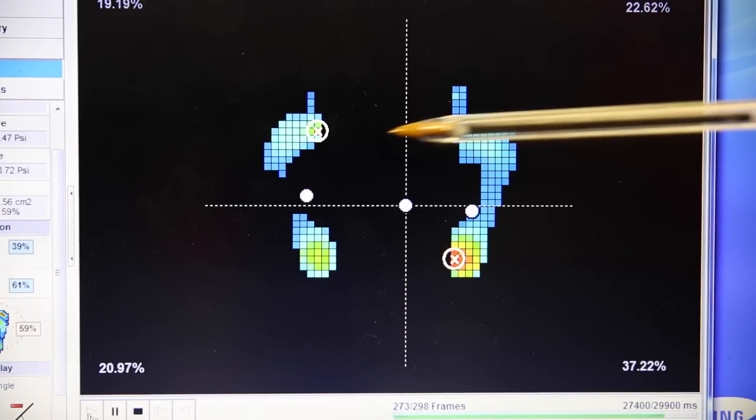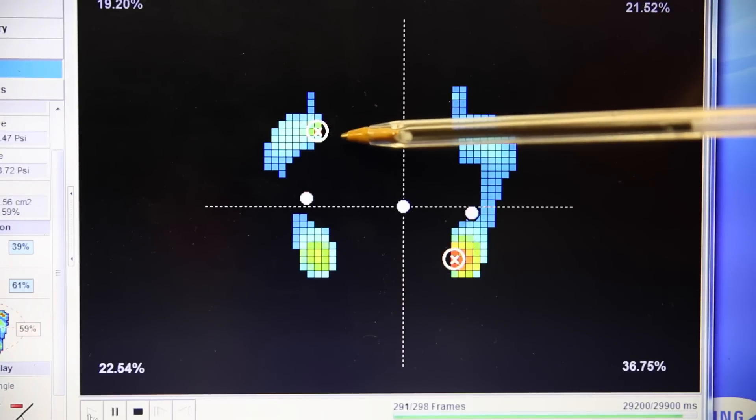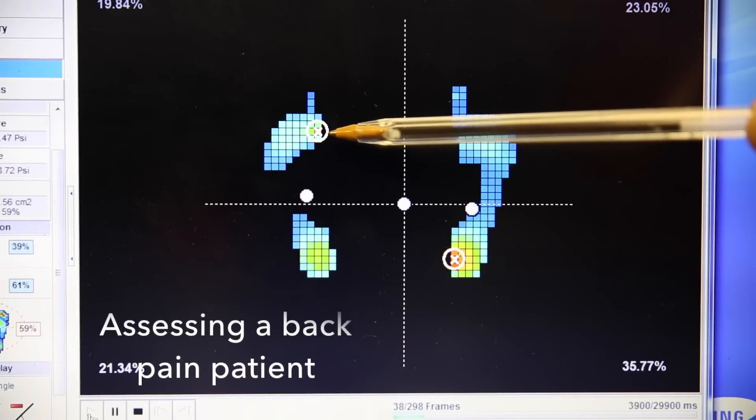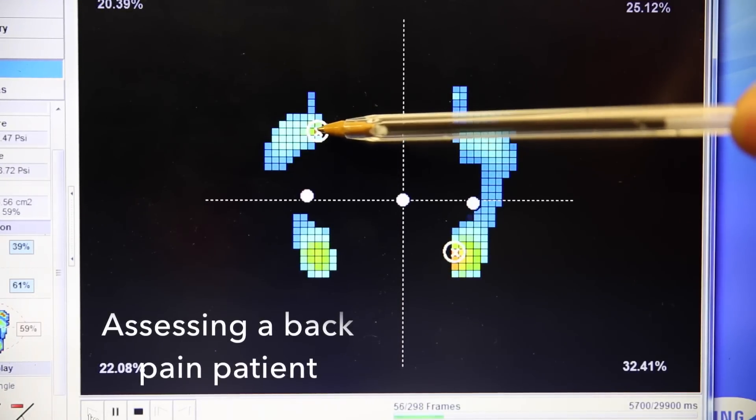The circle with the X is finding the pressure cell with the greatest pressure, so you often find that underneath the first metatarsal as the first ray drops to try and stabilize the foot.